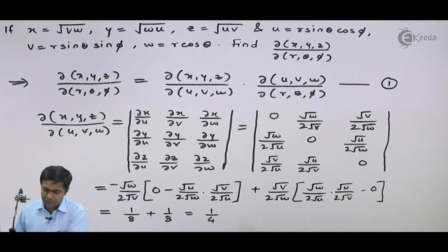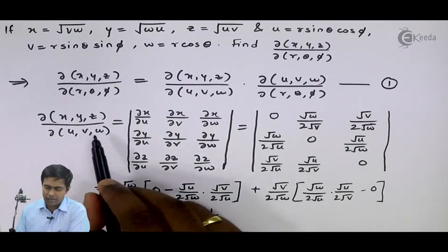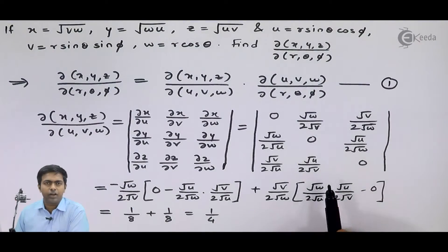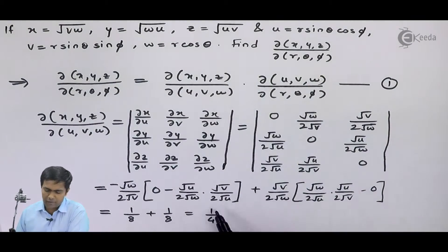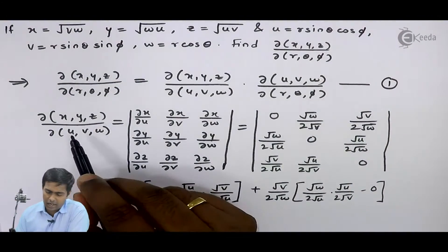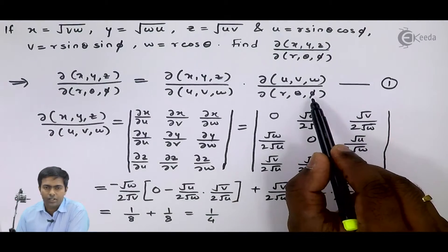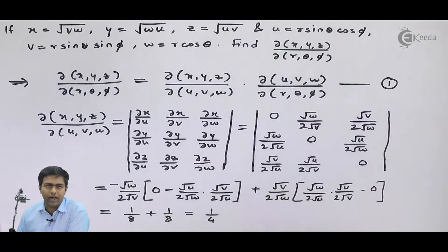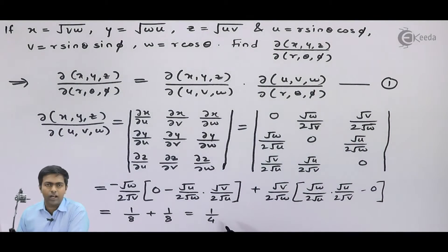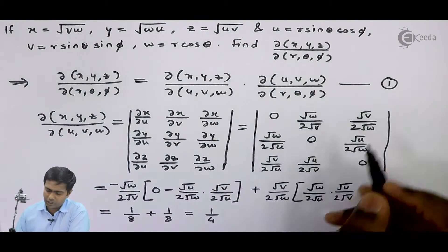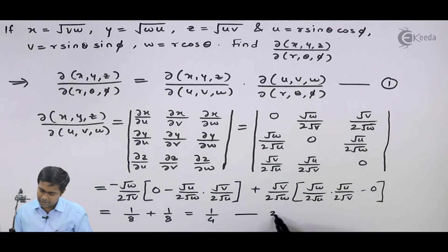After solving this determinant we got the value as 1/4. Now similarly I'll find the value of the second Jacobian, and after that we'll substitute both values in equation number 1. So I'm making this as equation number 2.